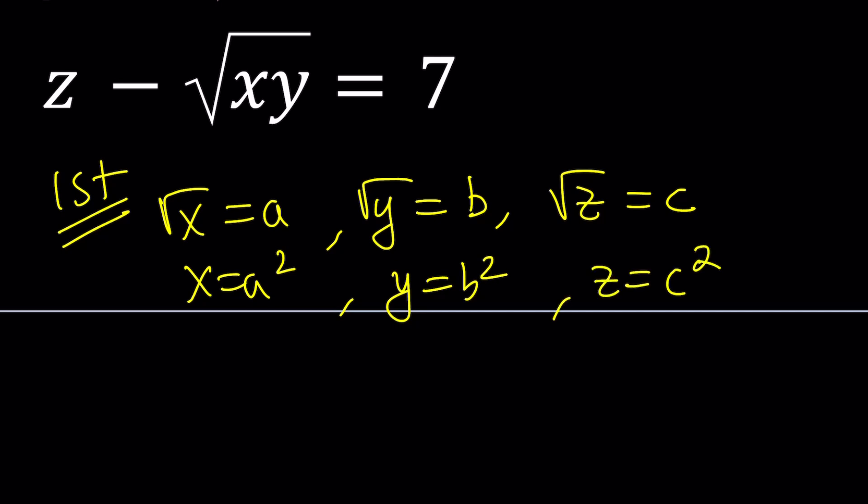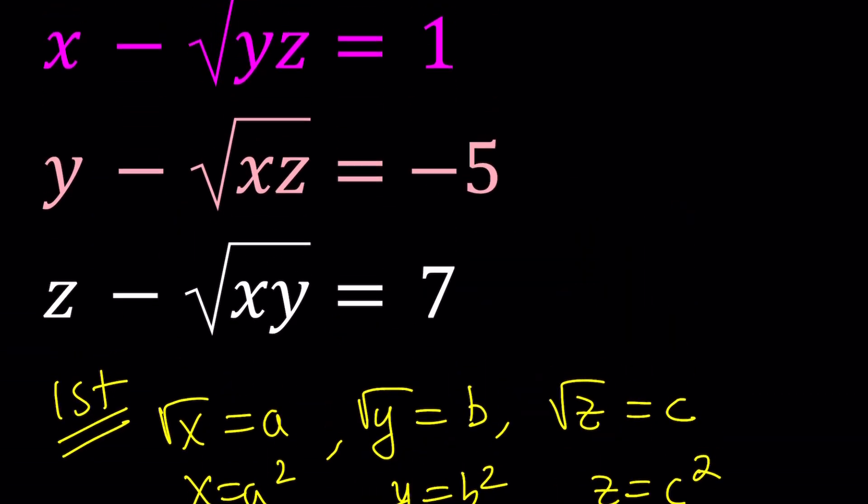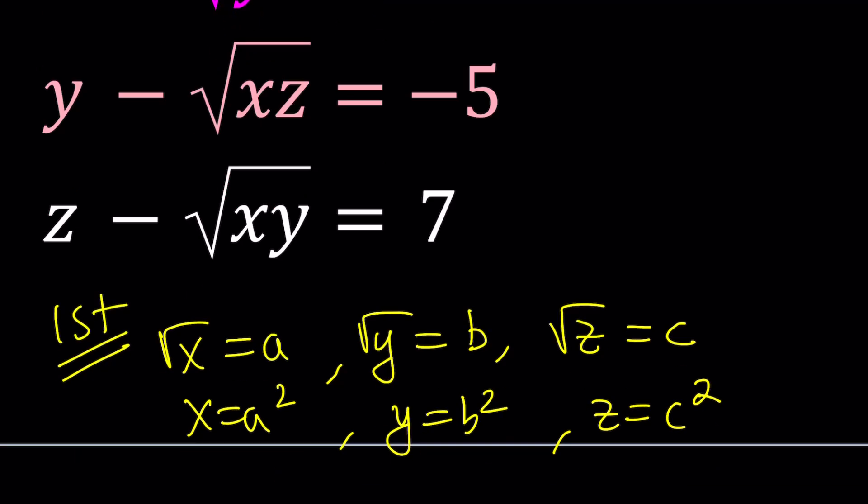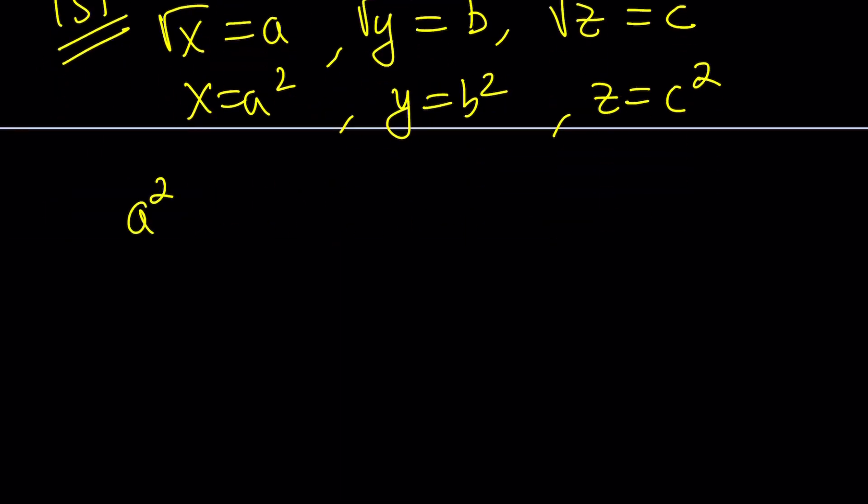Notice that since we are looking for real solutions, we do want a, b, c to be greater than or equal to zero. Otherwise, we're not going to have real solutions. So under those conditions, let's proceed. Replace everything. So you're going to get a different system. It's going to be a squared minus bc equals 1, b squared minus ac equals negative 5, and c squared minus ab equals 7. Here's our new system, and we're going to solve this system.